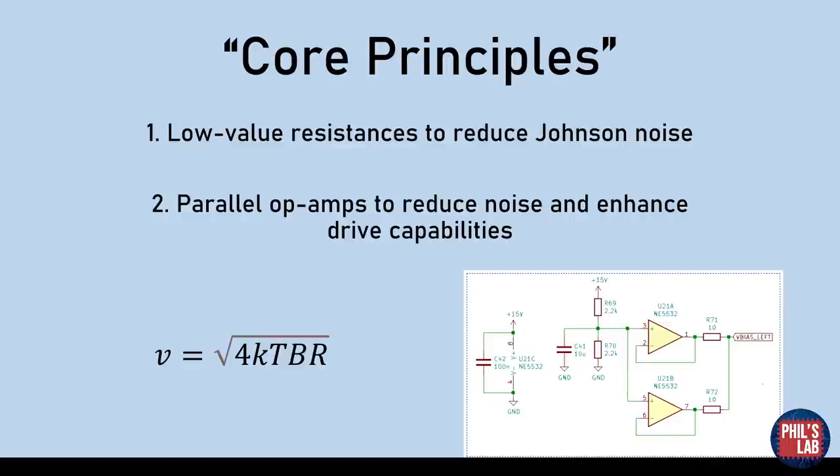When designing this amplifier I had two core principles in mind. First of all, we want to decrease our resistance values to reduce the Johnson noise. For example, instead of using a 10k resistor I might use a 2.2k resistor with consideration to reduce the Johnson noise, because the Johnson noise energy is this formula down here which scales with the square root of R.